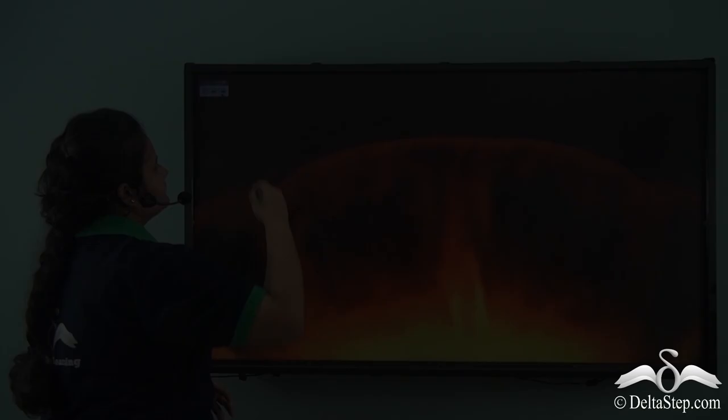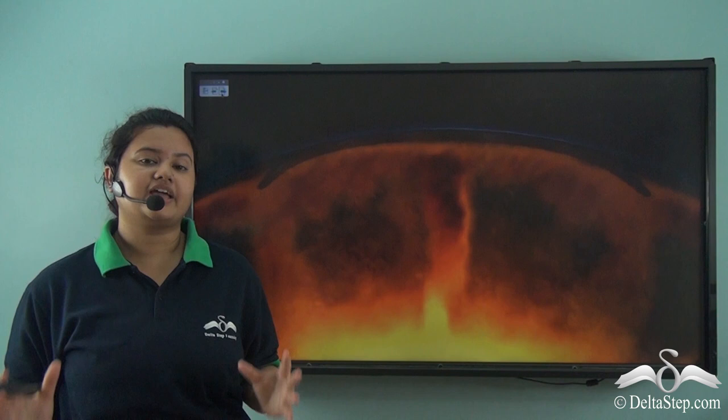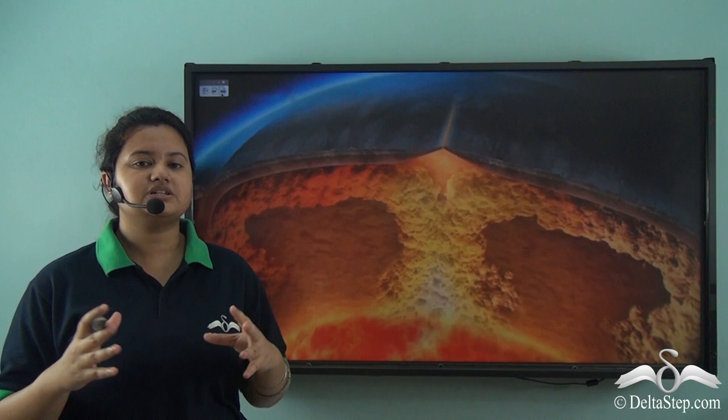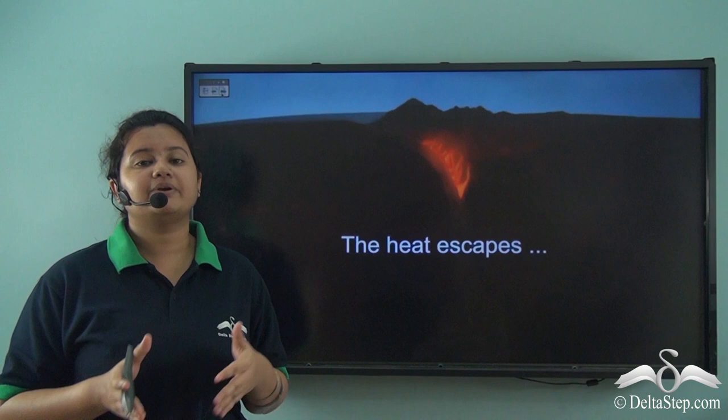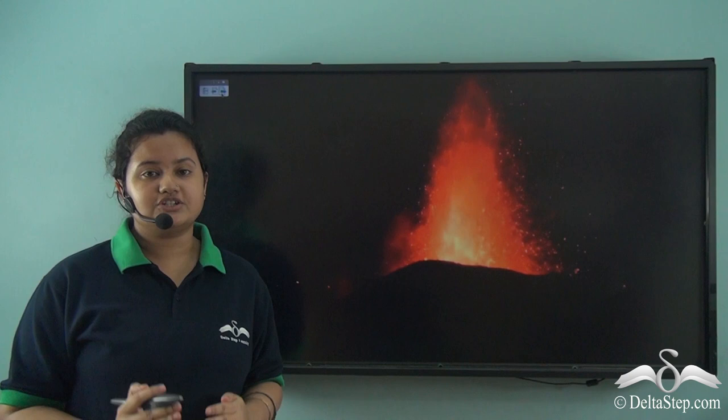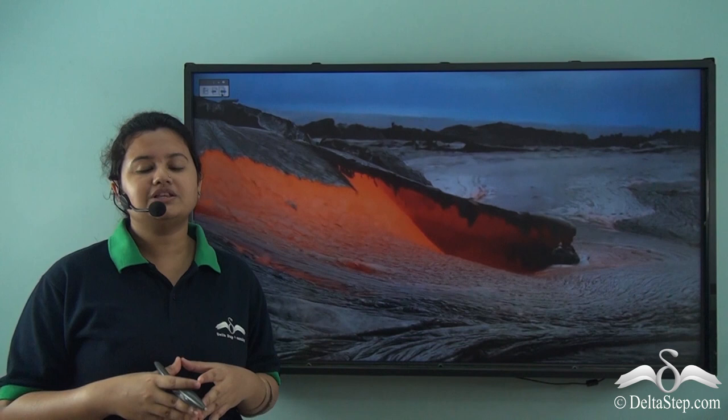So we just now learnt that volcanoes are formed due to endogenic forces or forces acting beneath the Earth's surface. In fact, a volcanic activity is closely associated with movement of tectonic plates. Due to excessive temperature and pressure beneath the Earth's surface the tectonic plates move. The heavier plates subduct while the less dense plates rise up. And due to this constant interaction of tectonic plates, cracks or faults develop on the Earth's surface. Now due to excessive pressure magma tries to escape through these cracks leading to the formation of a volcano.